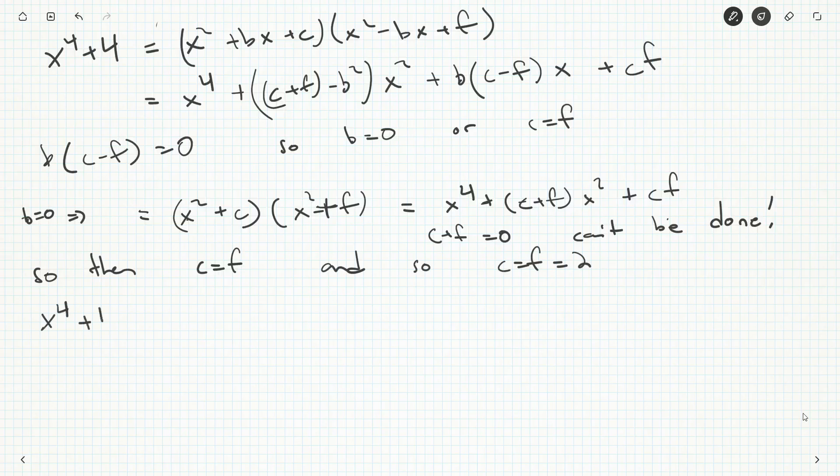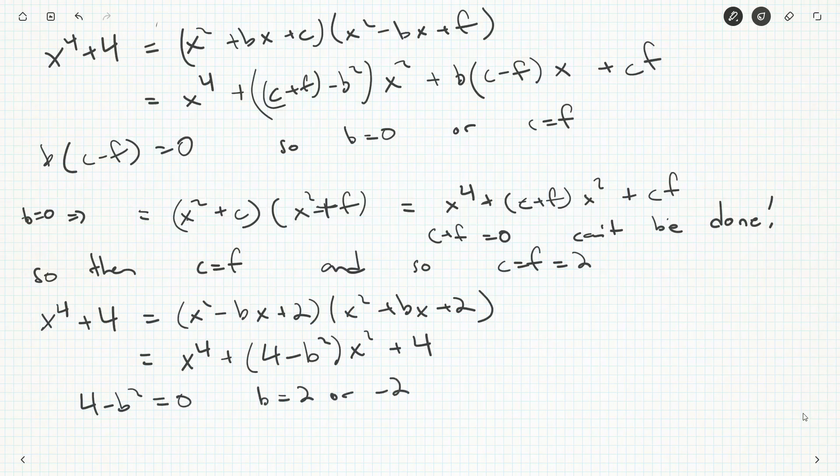x squared minus bx plus two. x squared plus bx plus two. x to the four. And then ultimately what you'll get is four plus, or two plus two is four minus b squared. x squared plus four. So four minus b squared has got to be equal to zero. b is either two or minus two. It doesn't matter which. Because either one is going to, you're just going to get, it's about the order of those two polynomials, and that does not matter. x squared minus two x plus two.